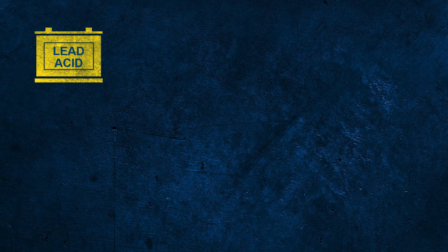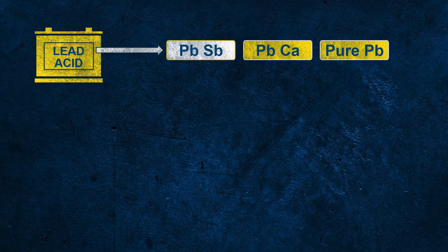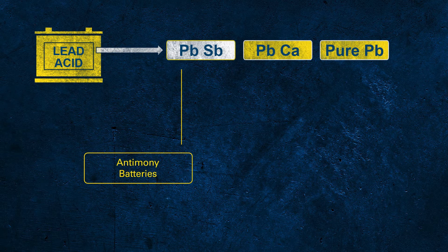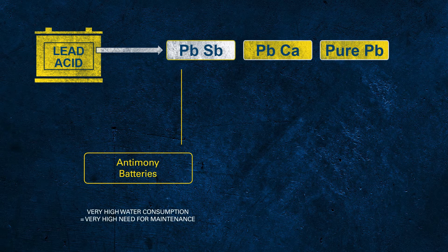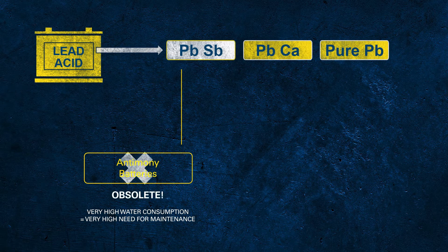When talking about lead, we're actually talking about the lead alloy used to produce the grids. There are different alloys potentially used for batteries. PBSB indicates so-called antimony SB batteries. Antimony batteries have very high water consumption, which is why they demand very high maintenance to regularly check the level of electrolyte and refill with distilled water. This is why this battery technology is obsolete today.